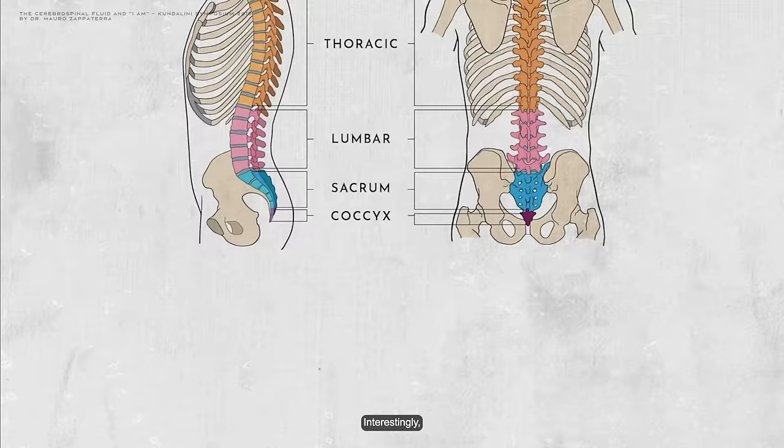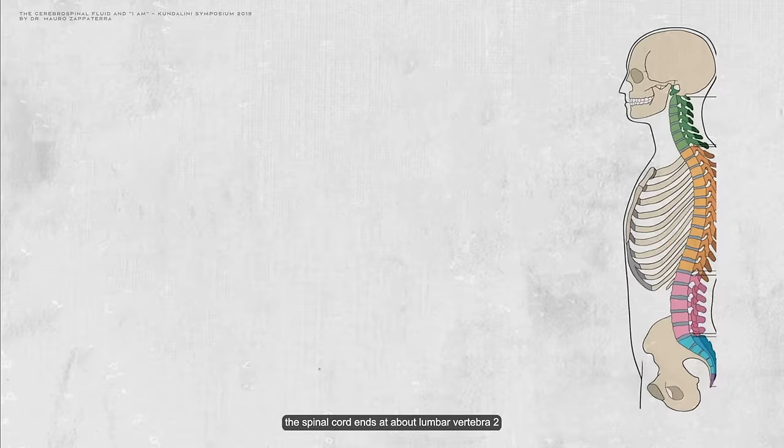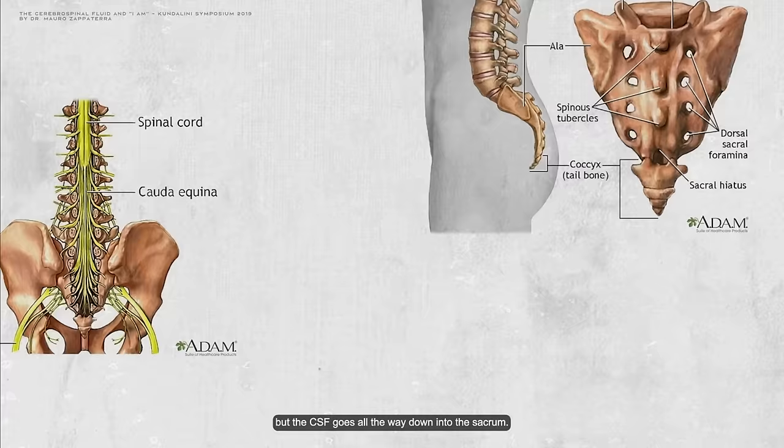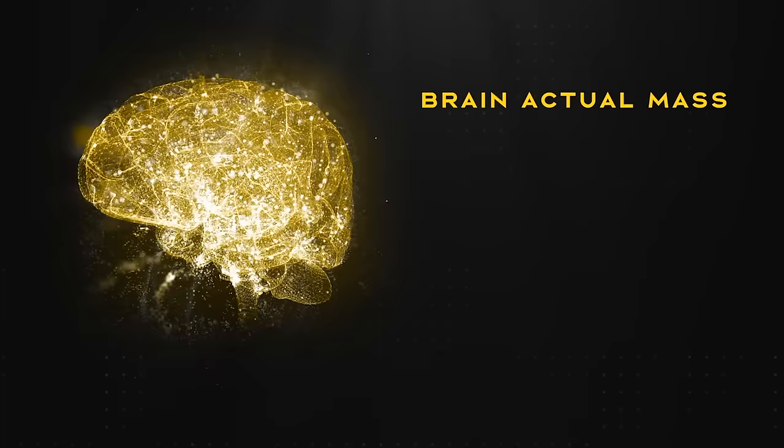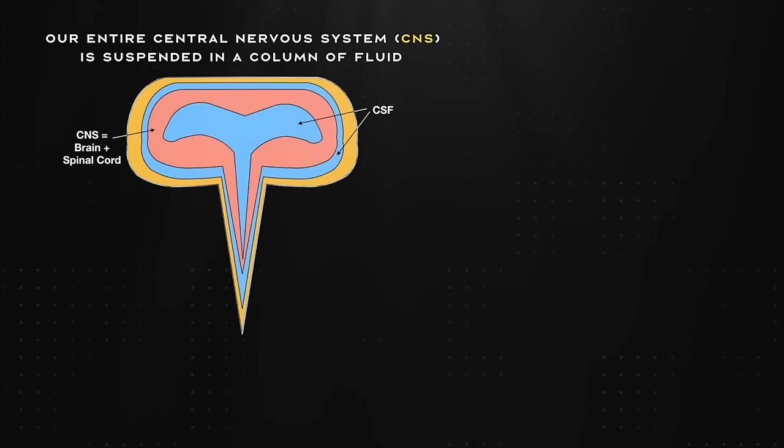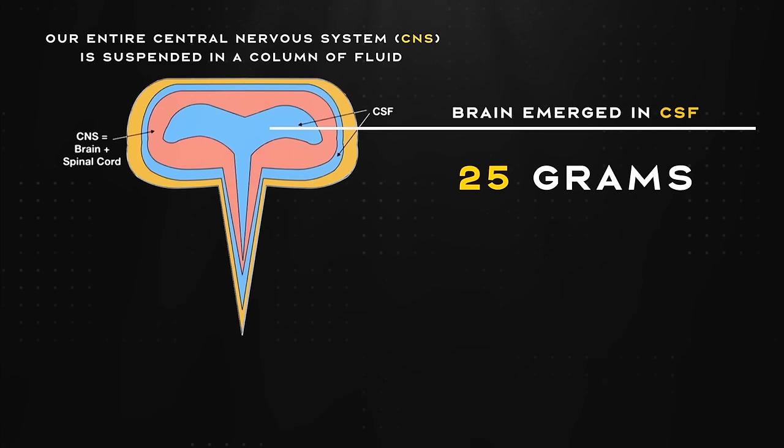Interestingly, the spinal cord ends at about lumbar vertebra 2, but the CSF goes all the way down into the sacrum. It's important to know that the human central nervous system is remarkably suspended in a column of fluid. While the brain's actual mass ranges from 1,400 to 1,500 grams, its effective weight when immersed in cerebrospinal fluid is significantly reduced to around 25 to 50 grams. This illustrates that the entire central nervous system essentially floats within this fluid.